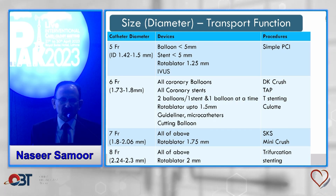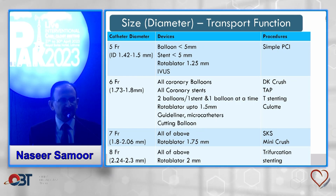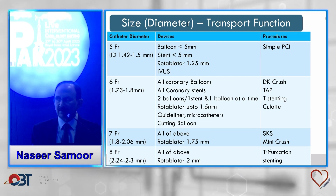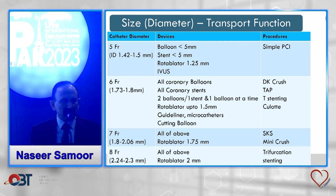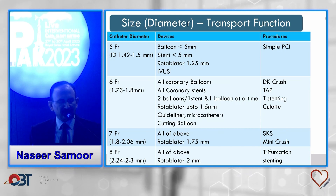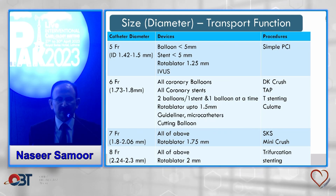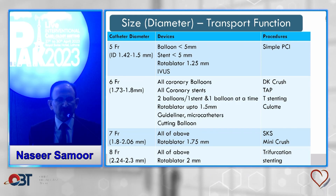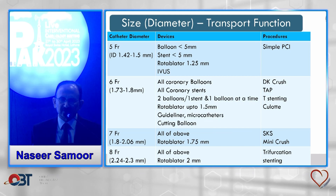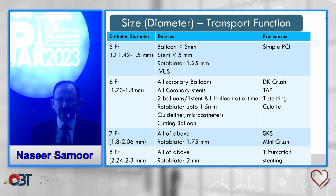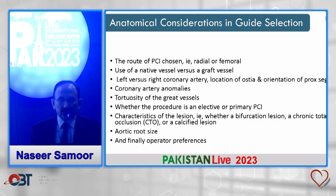Common routine angioplasties are mostly done with 6 French, but 5 French are also commonly used, especially through the radial access. Seven and eight French catheters are used for more complex procedures. Here you can see the various devices and procedures compatible with different guide catheter sizes.